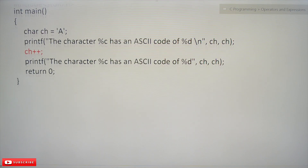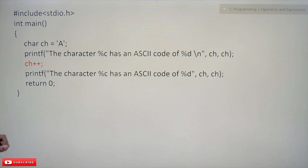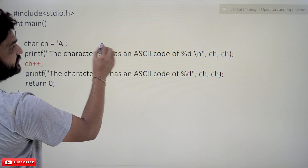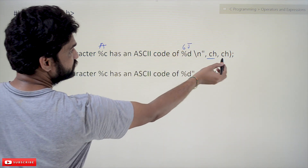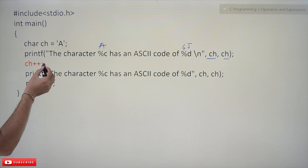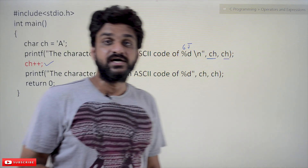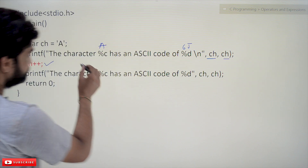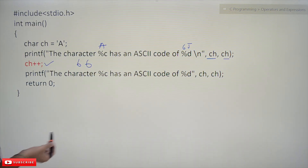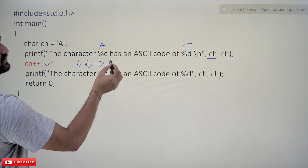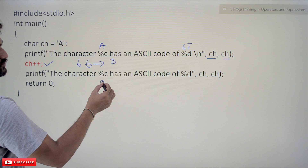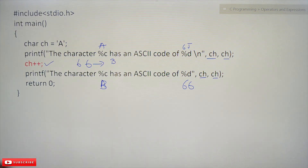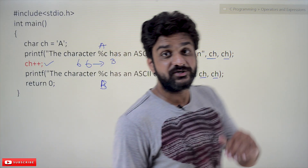Similarly, arithmetic operations, incrementations, and such operations can be performed on character data types. Here the character 'A' has an ASCII code of 65. Incrementing CH means the ASCII code 65 will get incremented, so after incrementation we get 66. The ASCII code 66 corresponds to capital 'B', so it will print: 'A has an ASCII code of 65 and B has an ASCII code of 66'.